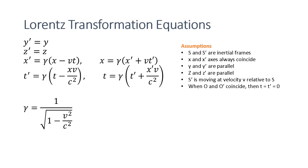Finally, the Lorentz transformation equations are: Y prime equals Y, Z prime equals Z, X prime equals gamma·(X minus V·T) and X equals gamma·(X prime + V·T prime). T prime equals gamma·(T minus X·V/C²) and T equals gamma·(T prime + X prime·V/C²), where gamma equals 1 divided by the square root of (1 minus V²/C²). These equations are valid under the assumptions that both S and S prime are inertial frames, axes X and X prime always coincide, Y and Y prime are always parallel, Z and Z prime are always parallel, S prime is moving at velocity V relative to frame S, and when origins O and O prime coincide, T and T prime are set to 0.